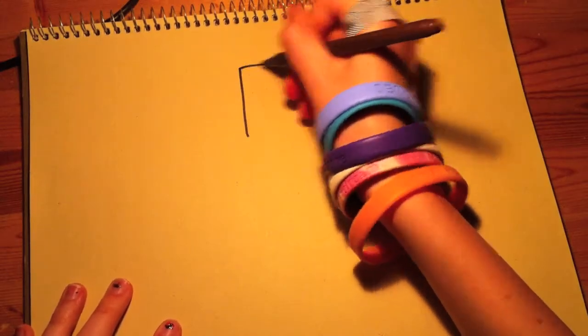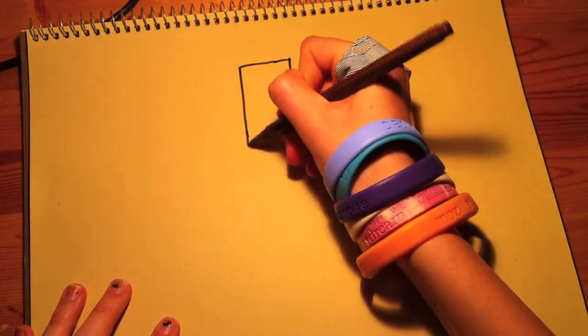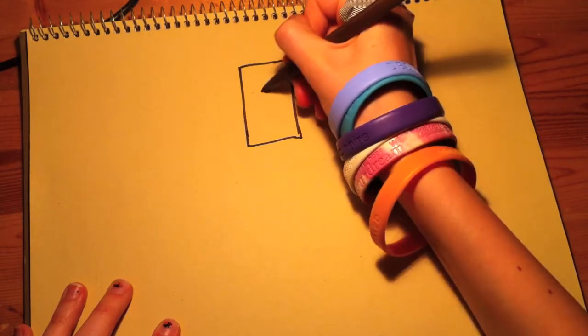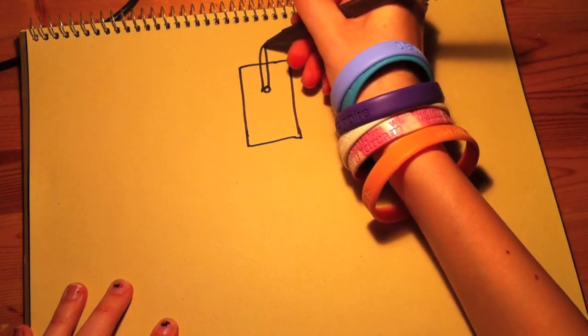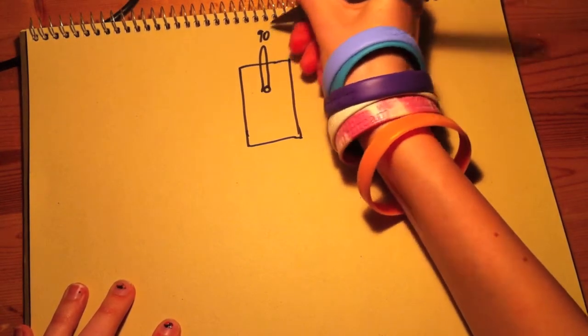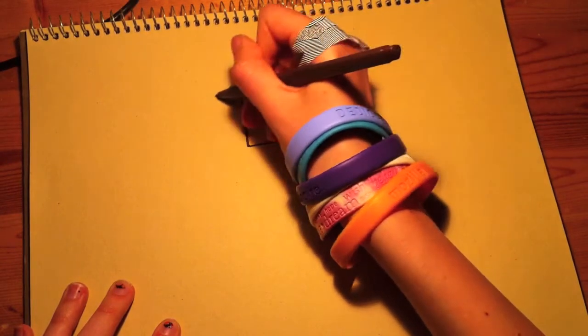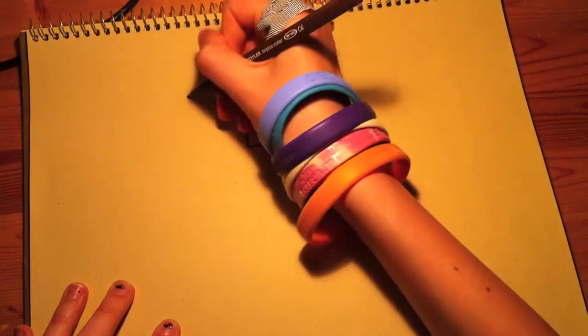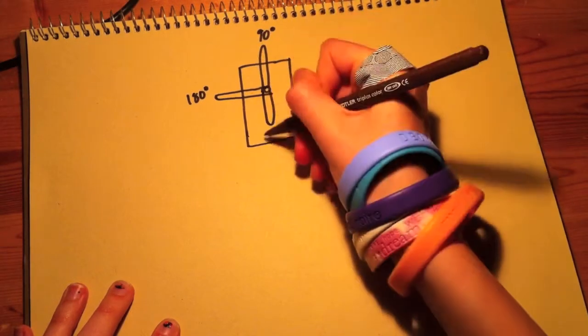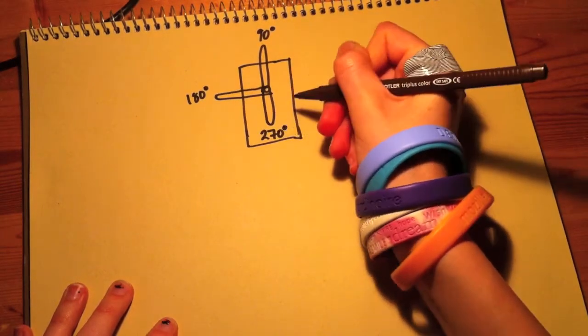Let's try and represent what a servo would look like and what its angles would be. Starting at the very top, this would be a 90 degree angle. Here it's 180 degrees and at the bottom it's 270 degrees.